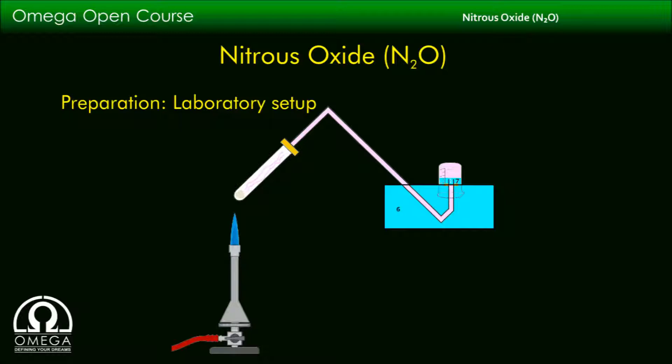This diagram shows the laboratory setup for the preparation of Nitrous Oxide. Ammonium nitrate is placed in the test tube and it is heated with a Bunsen burner. The gas produced is collected over water as shown.